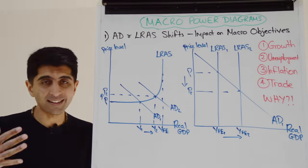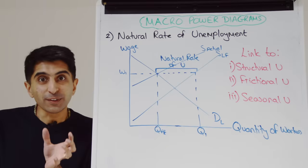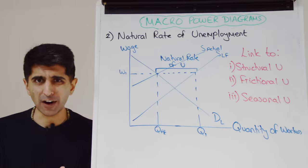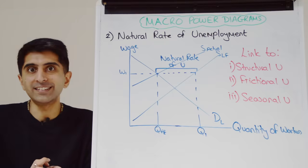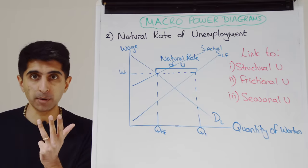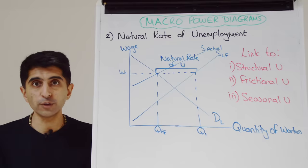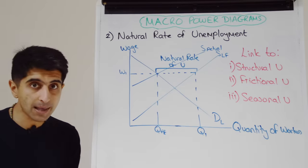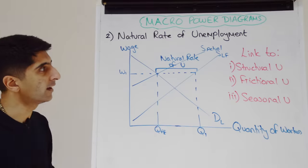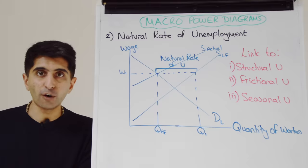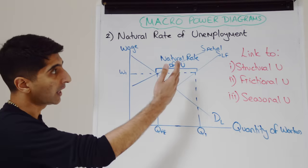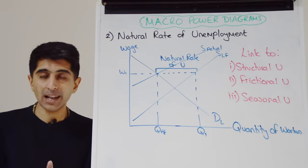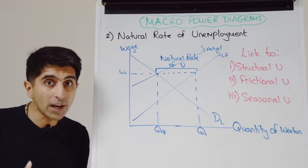Number two is your diagram for the natural rate of unemployment. A lot of students don't even know this diagram exists, and it's very powerful. You can use it in two ways: one, to illustrate the natural rate and the three types of unemployment within it — structural, frictional, and seasonal — and two, to show the impact of supply-side policies to reduce the natural rate. Here's the diagram: we're in the labour market with demand for labour, but we have two supply curves — the labour force supply curve (SLF) and the actual labour supply curve.